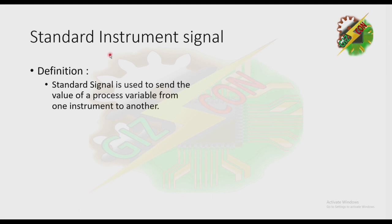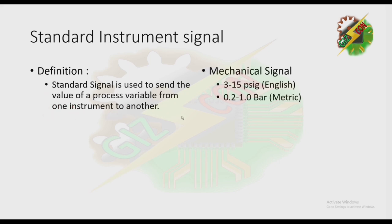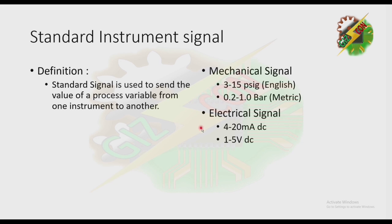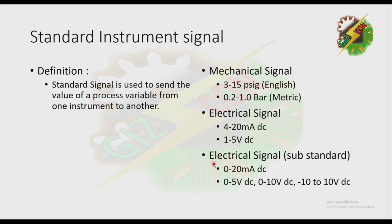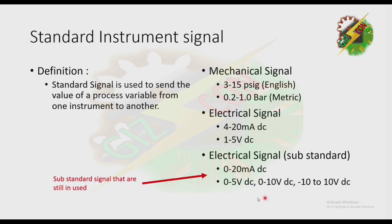Now let's discuss standard instrument signals. By definition, a standard signal is used to send the value of the process variable from one instrument to another. For standard mechanical signal, we have 3 to 15 PSIG for the English system, and 0.2 to 1.0 bar for the metric system. For standard electrical signal, we have 4 to 20 milliampere DC, and 1 to 5 volts DC. There are also substandard electrical signals still used on some instruments: 0 to 5 volts, 0 to 10 volts, and negative 10 to 10 volts.